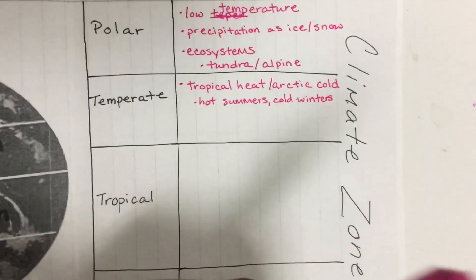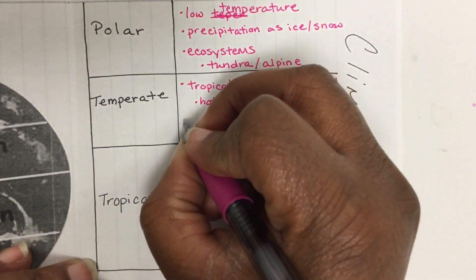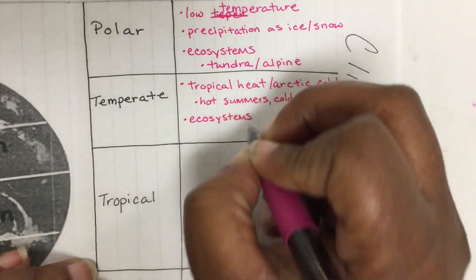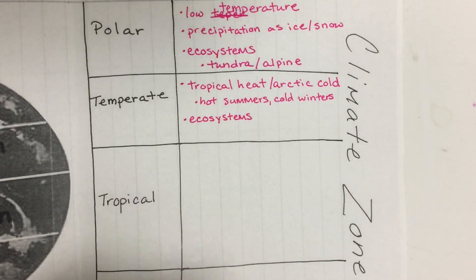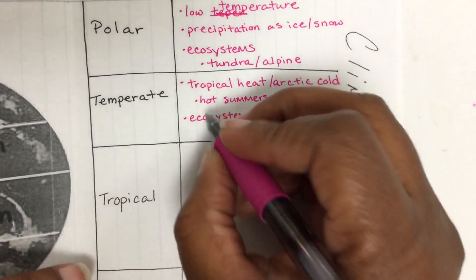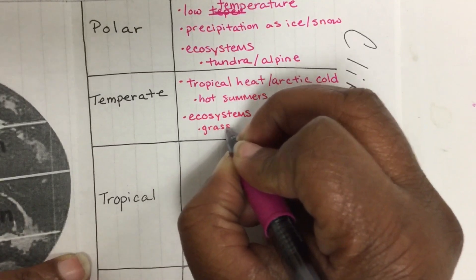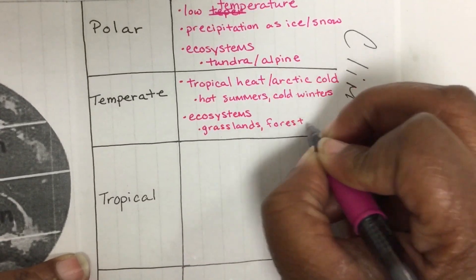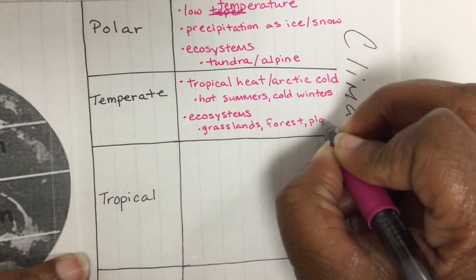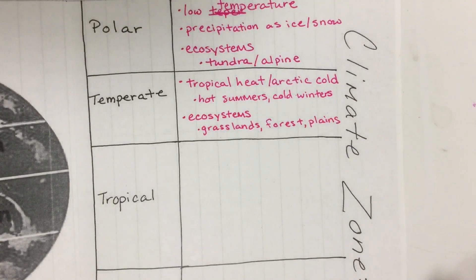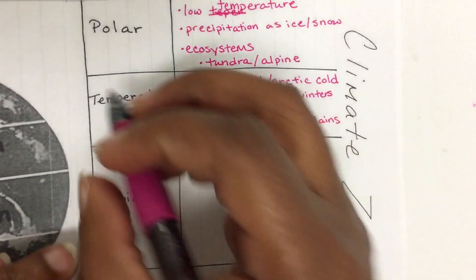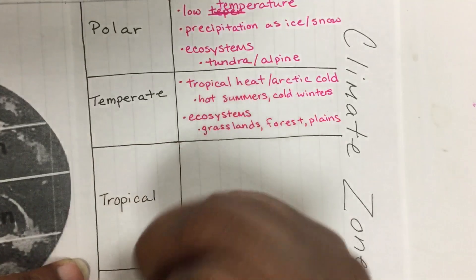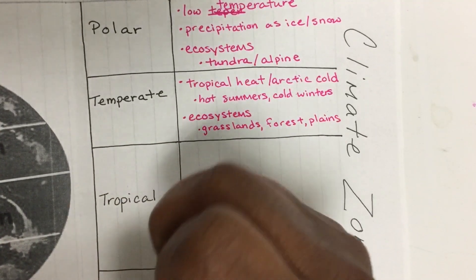There are a lot of ecosystems you can find here. Grasslands, forests, and plains are just a few of them. We typically live in between the temperate and tropical zone, depending on which map you're looking at.